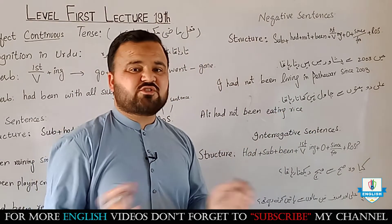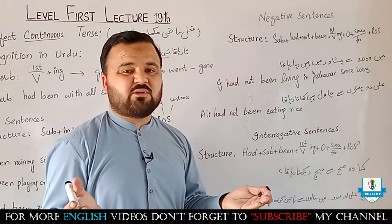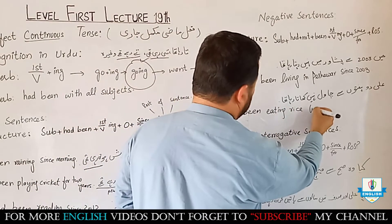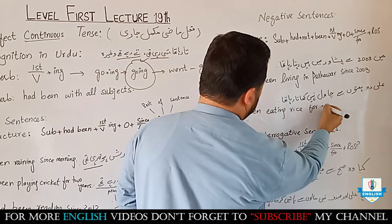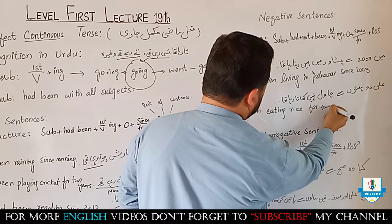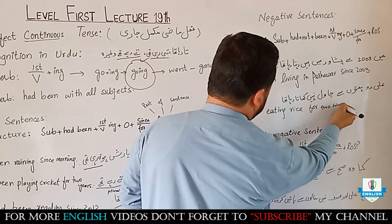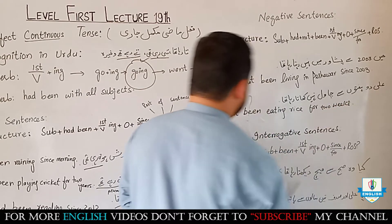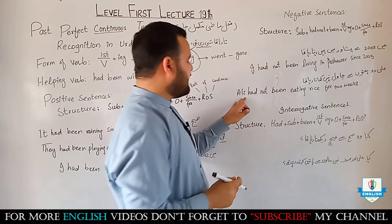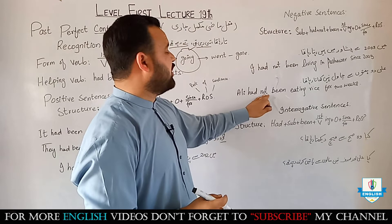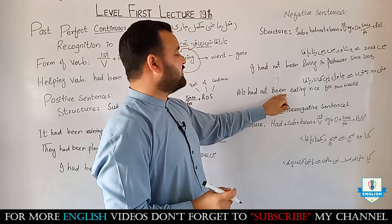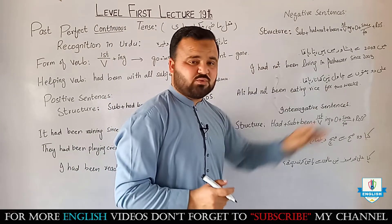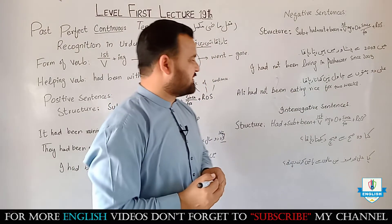Another negative example: Ali had not been eating rice for two weeks. 'Two weeks' is unknown time, so we use 'for'.